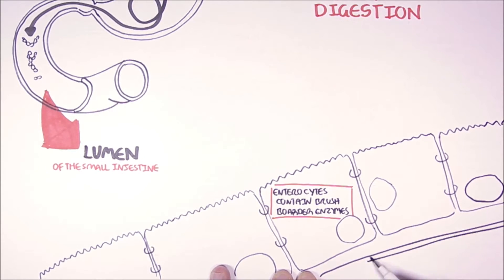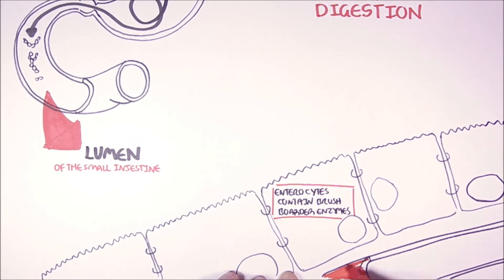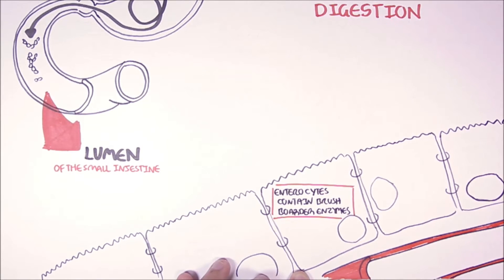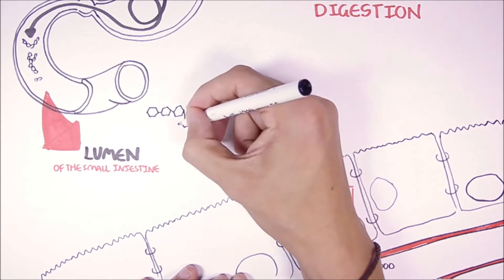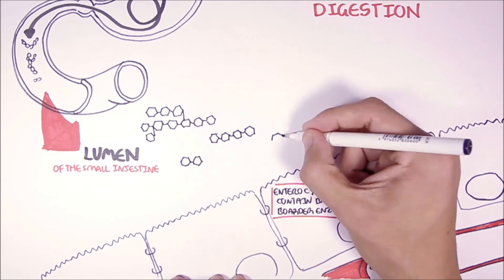Below the enterocytes we have the bloodstream. So when starch reaches the small intestine, it is already in a partially hydrolyzed form, remember.